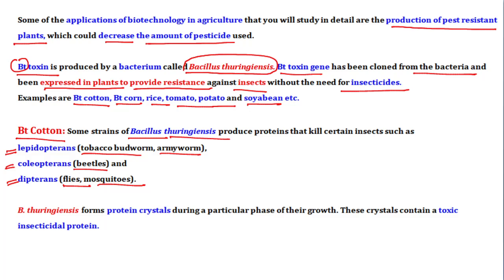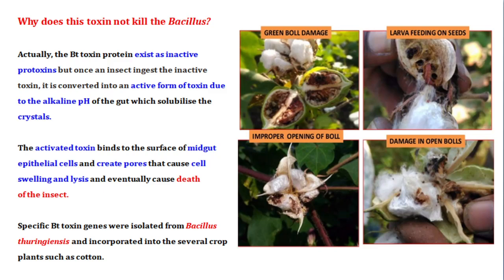Bacillus thuringiensis forms protein crystals during a particular phase of growth. These crystals contain highly toxic insecticidal proteins. This toxic protein is produced by the Bacillus bacteria.